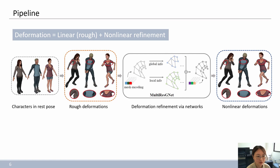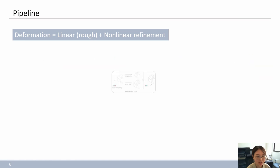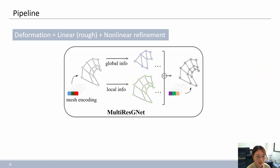Specifically, for the process of MultiResGNet, the rough-deformed meshes are first parameterized with graphs, which are then input into the network.